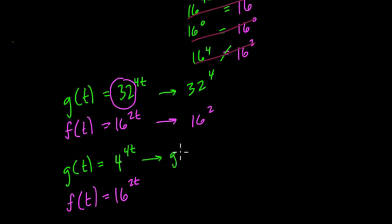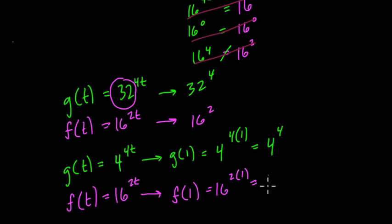Try different t values. So what is g(1) equal? That equals 4 to the 4 times 1, which is just 4 to the 4th. And here, notice I'm not even figuring out what that is exactly. I just want to play with these numbers for a little bit. We want to know what is f(1). Well, f(1), when t is 1, is 16 to the 2 times 1, which is 16 squared.